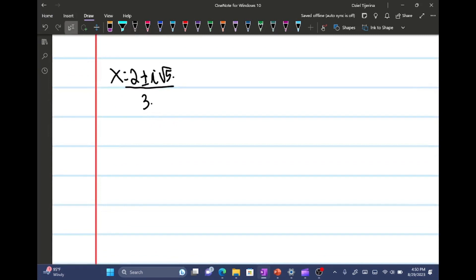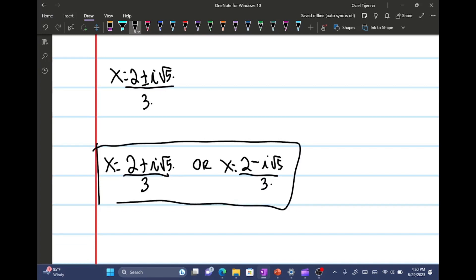And so then we have x equals 2 plus or minus i square root 5 all over 3. And so our answer becomes x equals 2 plus i square root 5 all over 3, or x equals 2 minus i square root 5 all over 3. And these guys are our two answers for this problem.